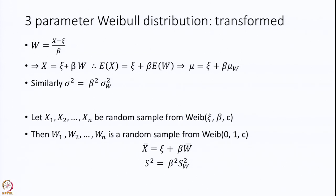Therefore, the expected value of x is psi plus beta times the expected value of W, which is psi plus beta times mu sub W. Similarly, the variance of the three-parameter Weibull distribution — variance of x — equals sigma square, which can be written as beta squared times sigma sub W squared. Let x1, x2, ..., xn be a random sample from Weibull(psi, beta, C). Then W1, W2, ..., Wn becomes a random sample from Weibull(0, 1, C), and x-bar is psi plus beta times W-bar, and S square is beta squared times S_W squared.